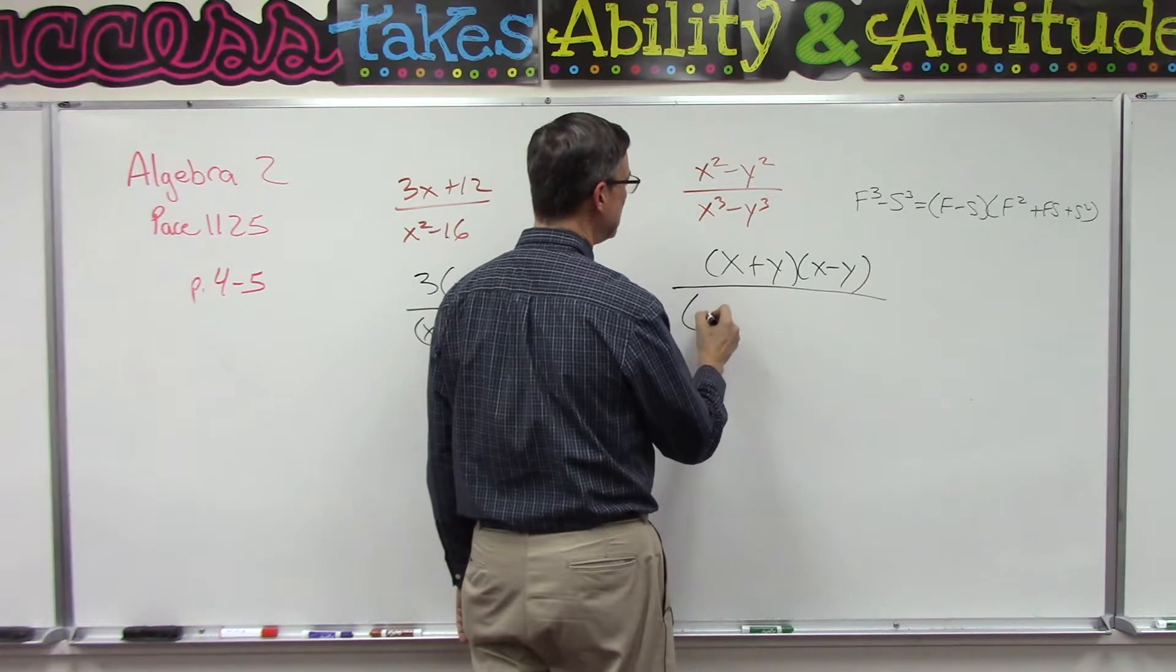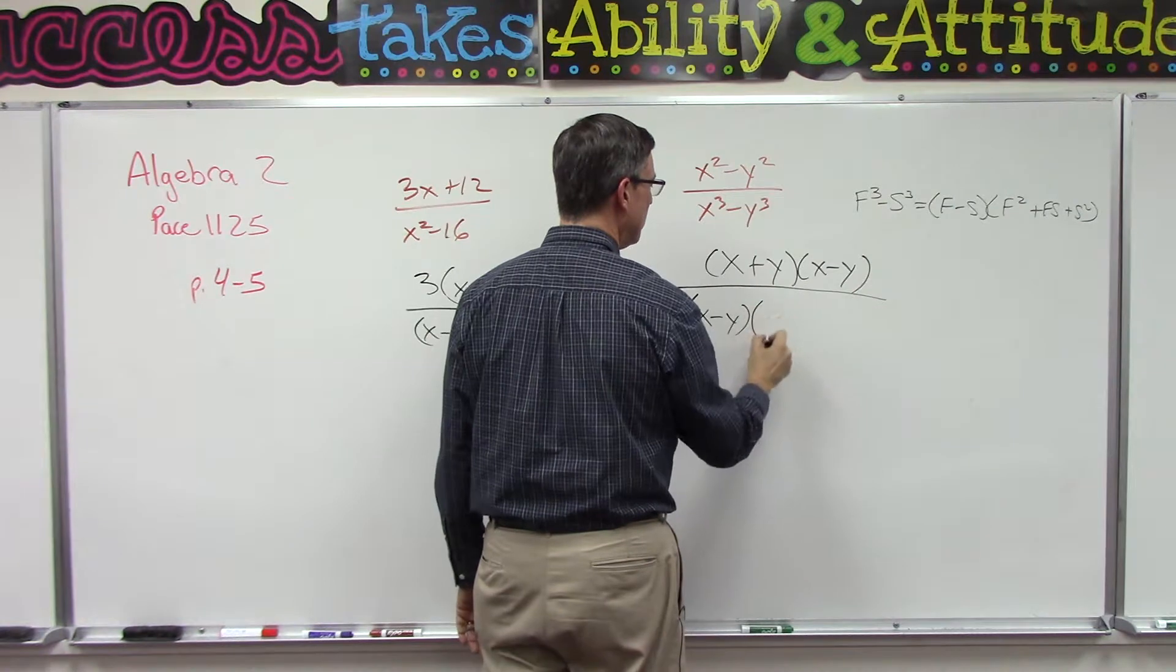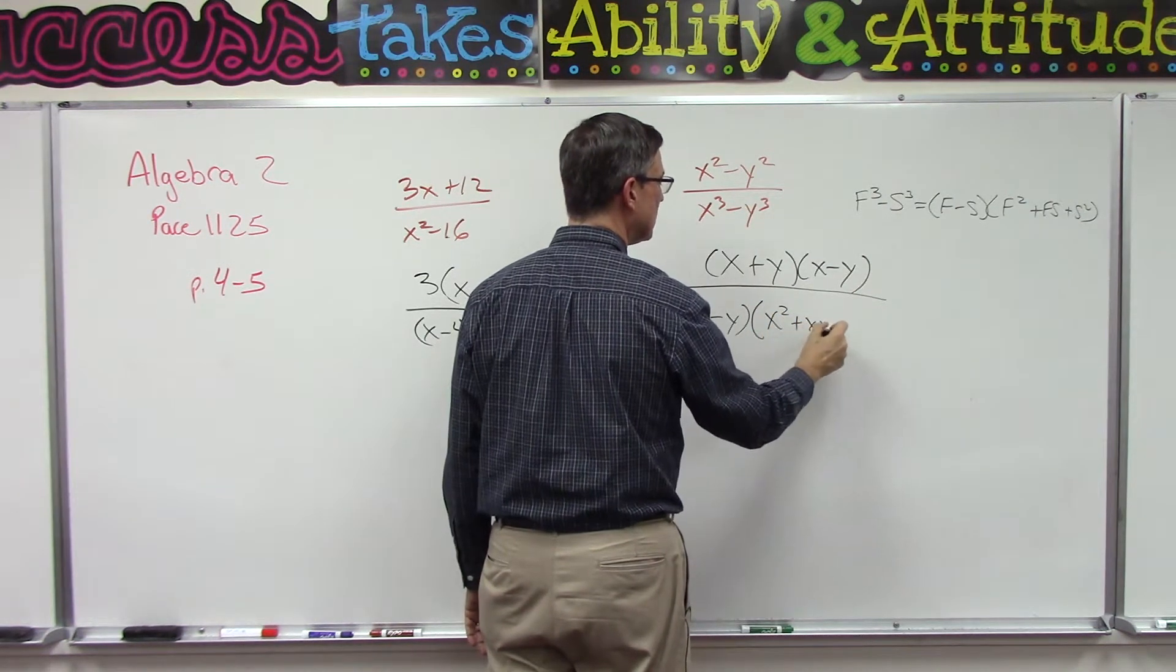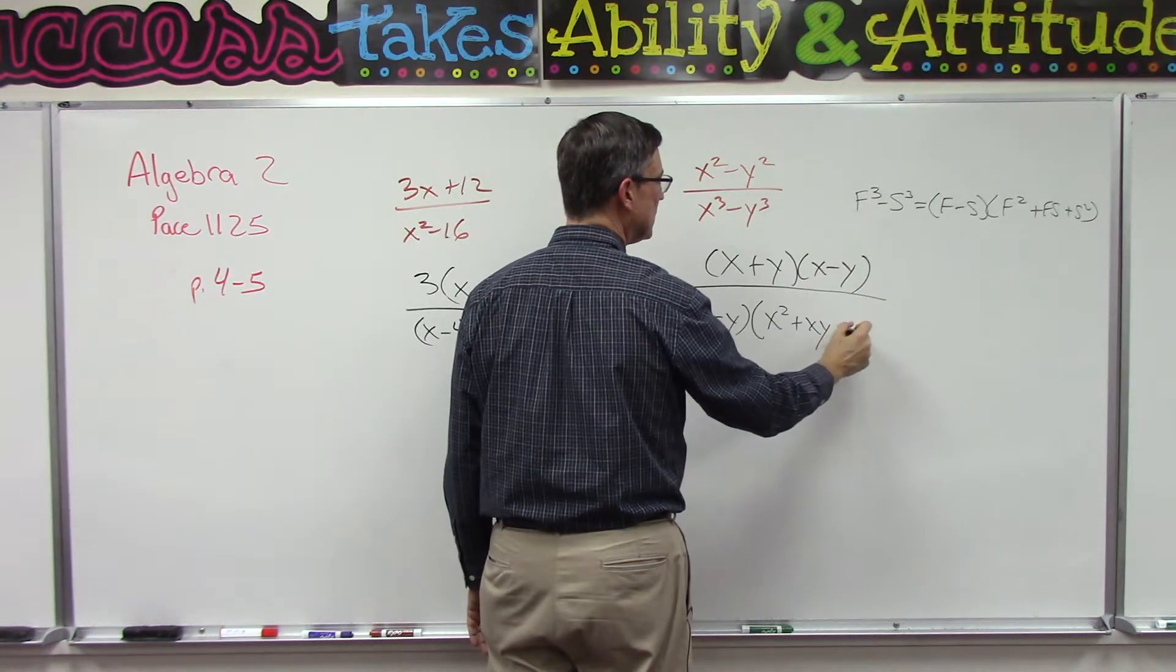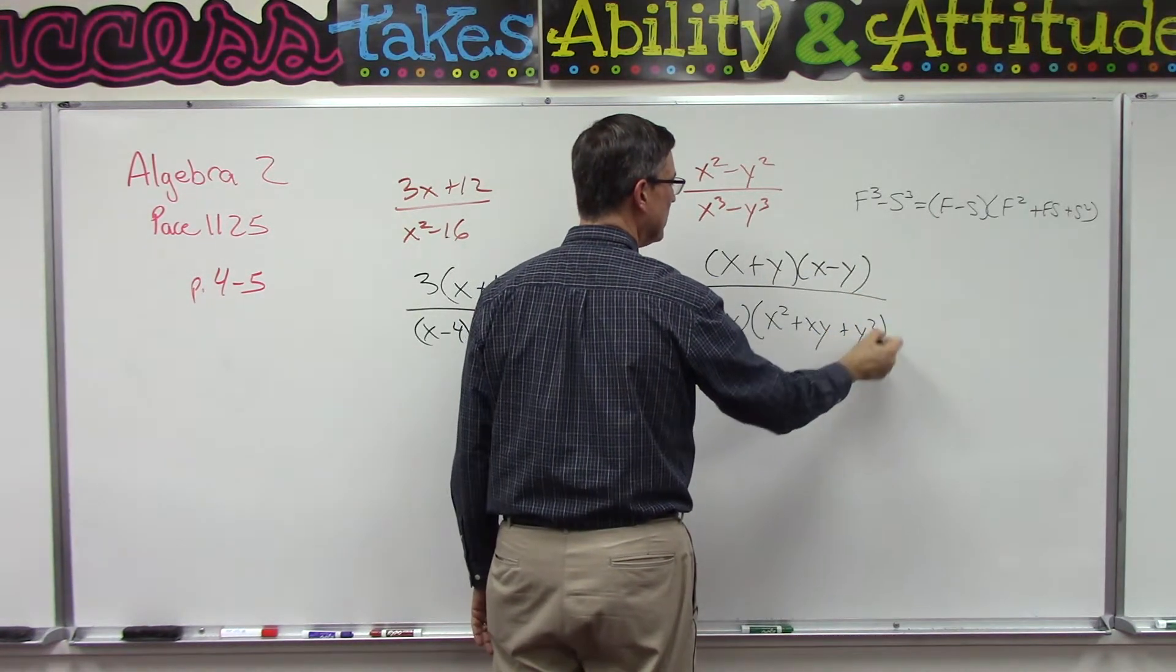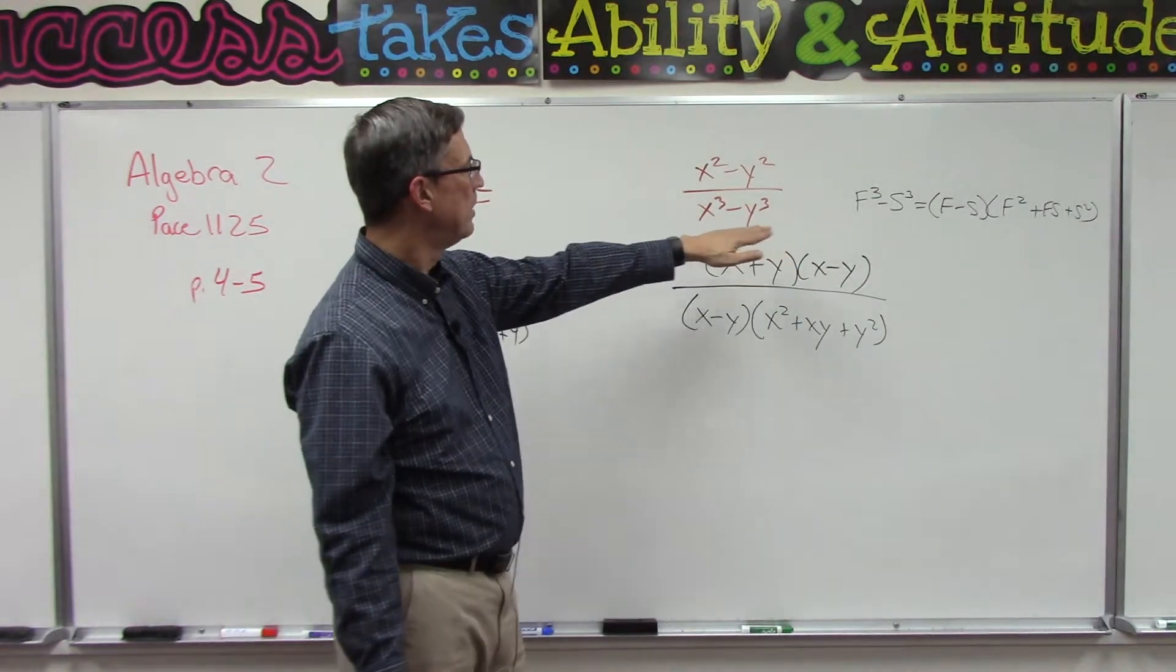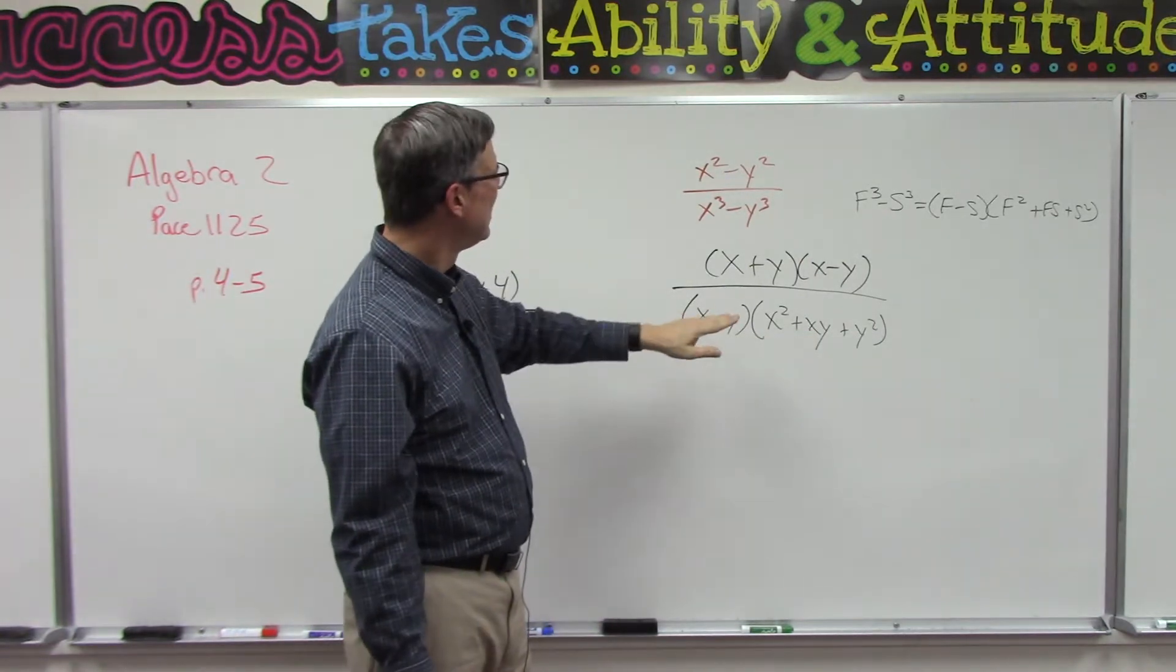Parentheses: I'm going to do x and y, so (x - y). All right, parentheses: x² + xy—first times second—plus the second squared, which is y². All we did is follow the pattern and plug in x and y in place of the f and s. Boom.